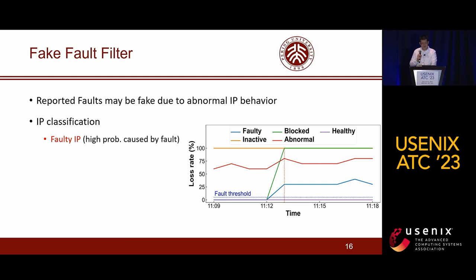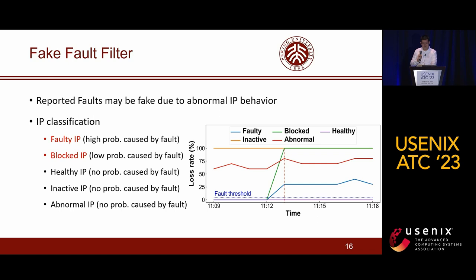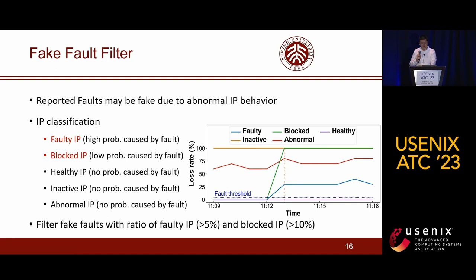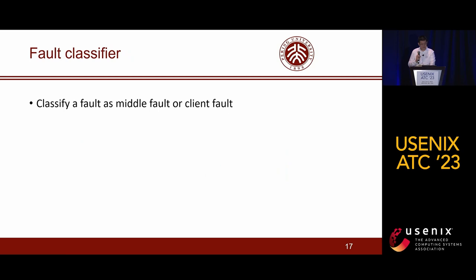Among them, the faulty IP is characterized by an increment in the packet loss rate above the threshold after the fault occurs. We consider a faulty IP is affected by the fault with high probability. A blocked IP is identified by its loss rate reaching 100% after the fault occurs — we consider that with high probability it is added into a block list by a certain network device, and with small probability it is suffering from a serious network fault resulting in 100% loss rate. The other three categories are not affected by the fault. After classification, the filter removes fake faults based on the ratio of faulty IPs and blocked IPs, with a lower threshold set for faulty IPs.